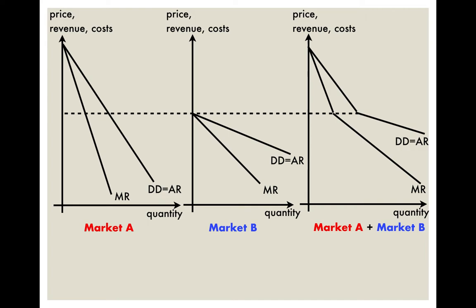Now let's look at what happens when this firm decides to charge a single price — meaning it is not doing third-degree price discrimination. To find the profit-maximizing quantity, we draw in the MC curve. The profit-maximizing point gives quantity Q and price P. However, if the firm charges this same price to all consumers, this price is actually too high for people in market B, meaning the firm only has customers from market A.